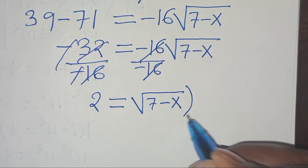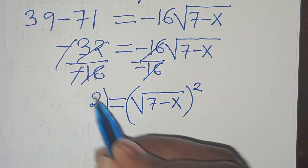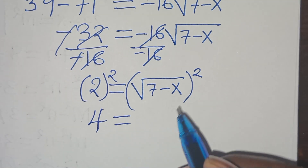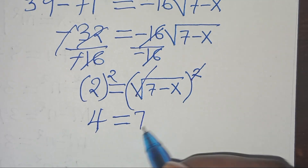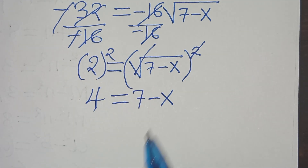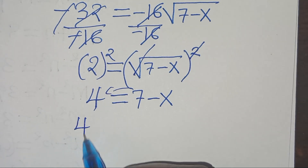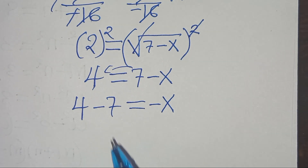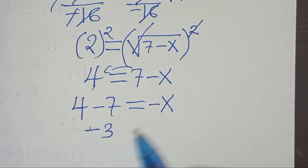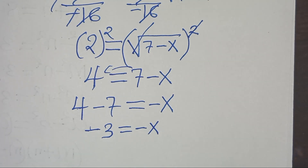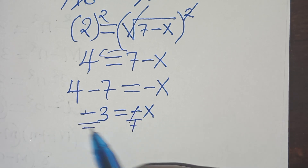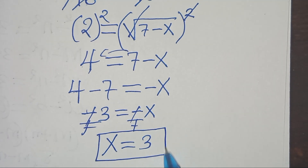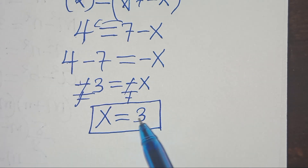Squaring both sides to eliminate the square root: 2 squared equals 4 equals 7 minus x. Taking 7 to the left: 4 minus 7 equals minus x, so minus 3 equals minus x. Dividing by minus 1, x equals 3. Both Method 1 and Method 2 give us x equals 3.